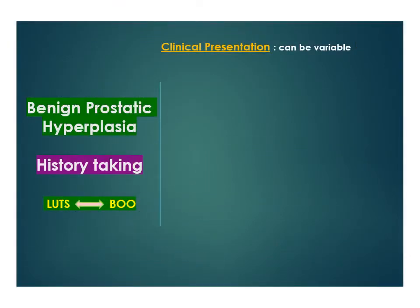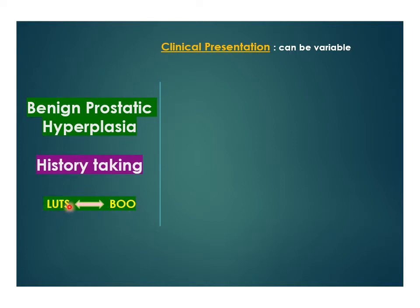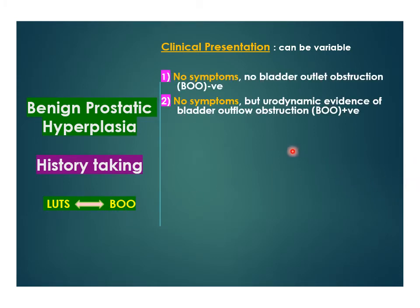The clinical presentation of BPH requires a very detailed history. Symptoms and signs relate to two groups: lower urinary tract symptoms (LUTS) and bladder outlet obstruction (BOO). Patients can be asymptomatic with no bladder outlet obstruction (BOO negative), or asymptomatic but with urodynamic evidence of bladder outlet obstruction (BOO positive). Among symptomatic patients, some may have LUTS positive but BOO negative, while others have both LUTS positive and BOO positive.